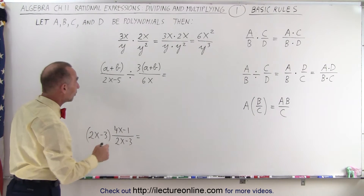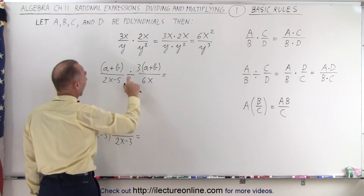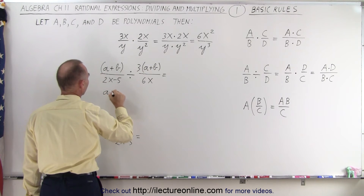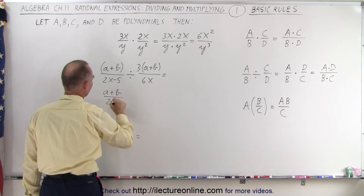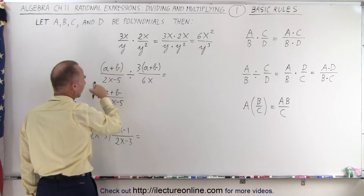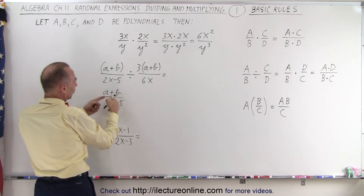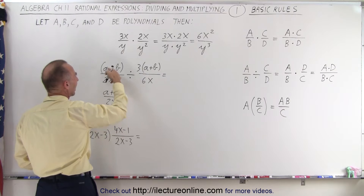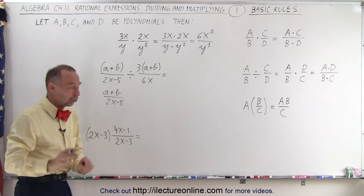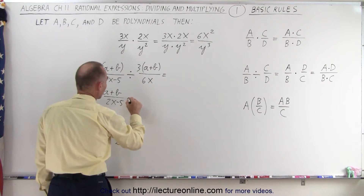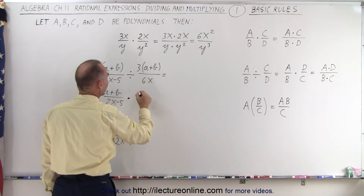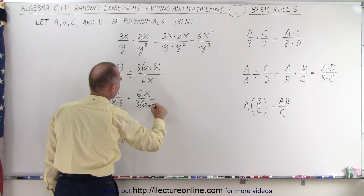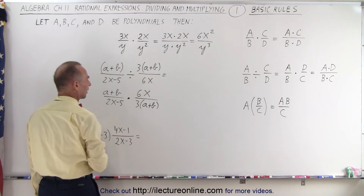Now when we have something like this where we're dividing, that can be rewritten as multiplication by taking the inverse. So this can be written as a plus b over 2x minus 5. We don't need parentheses there because the division line means a plus b in the numerator exactly the same way. But now we multiply times the inverse of that — simply flip it over: 6x over 3 times a plus b. Here we do need parentheses because we're multiplying times 3.